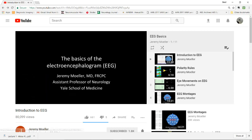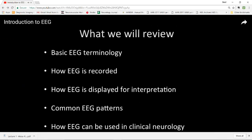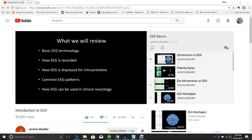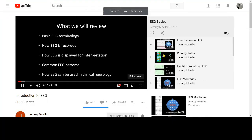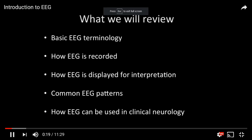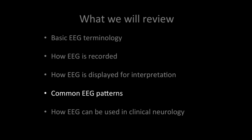Introduction to the electroencephalogram, or EEG — how it's recorded and how the results can be used in clinical neurology. We will review several topics briefly during this video, with further detail available in subsequent videos. Topics include basic EEG terminology, how EEG is recorded, how EEG is displayed for interpretation, some common EEG patterns, and how EEG results can be used in clinical neurology.